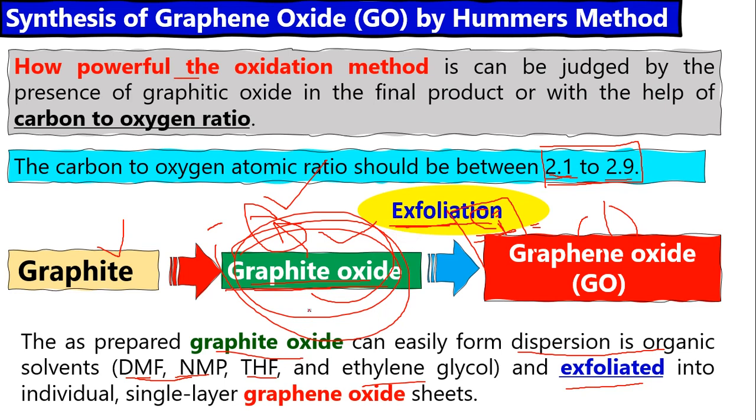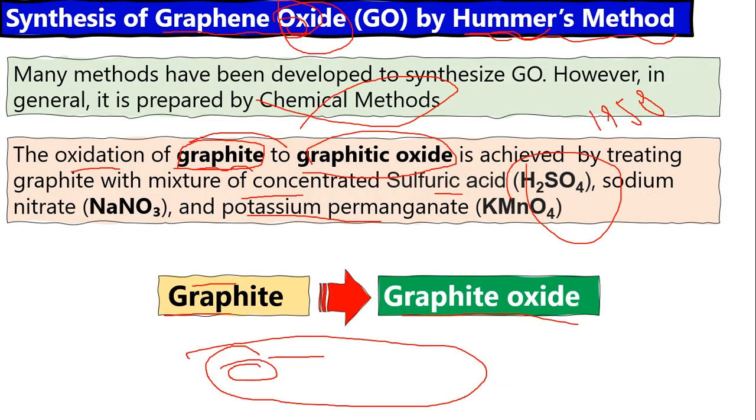When we exfoliate and vibrate graphite oxide, we get thin, single-layer individual layers that we call graphene oxide sheets. This Hummer's method has some modified methods where people replace the oxidizing agents with other forms.